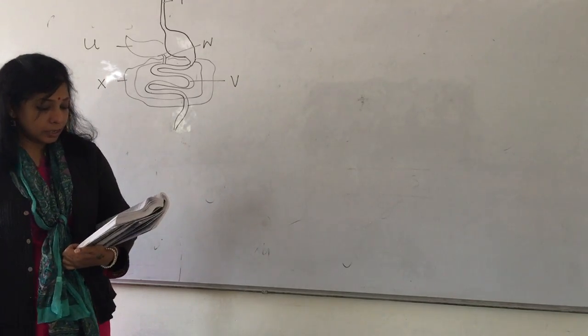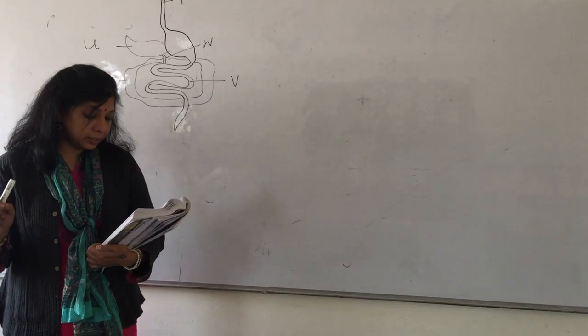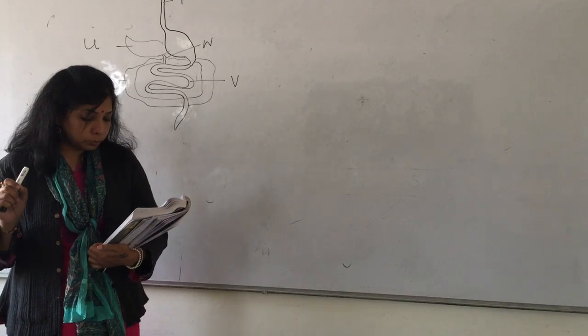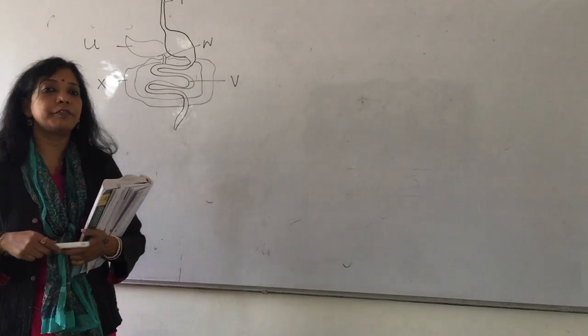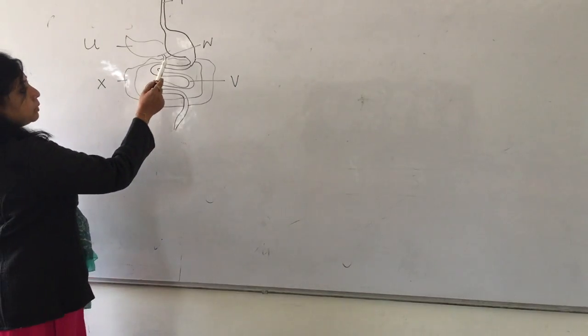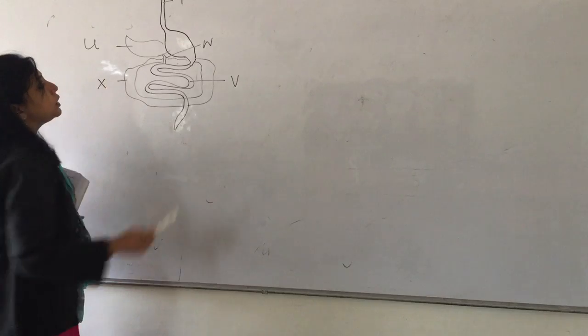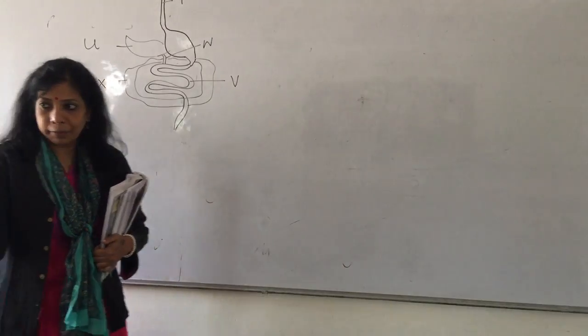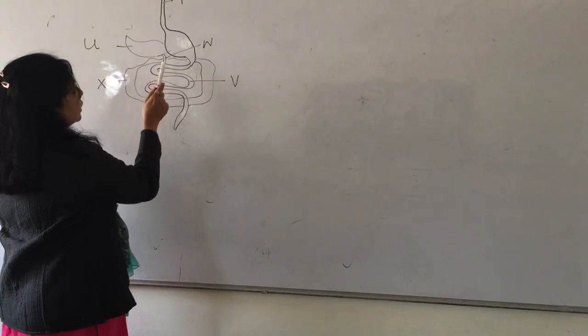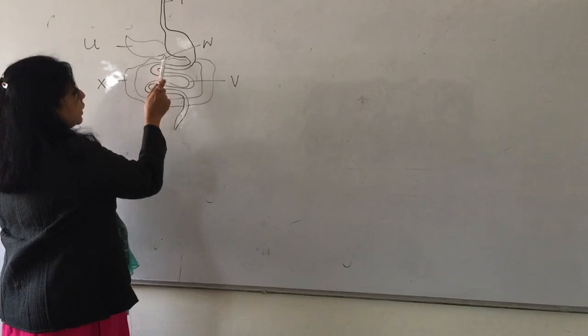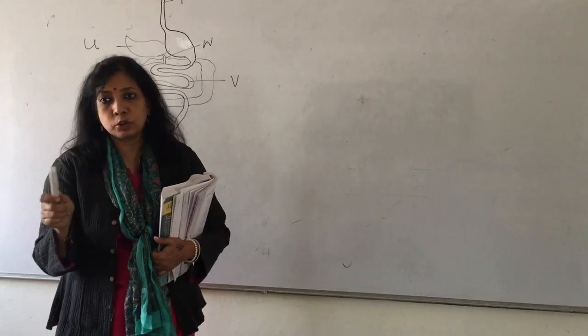Name the secretion which passes down the tube W and explain how it helps in the digestion of fat. W tube connects liver to small intestine. Logical reasoning should come here. Liver is connecting to small intestine, and W is there. So what secretion passes from W?